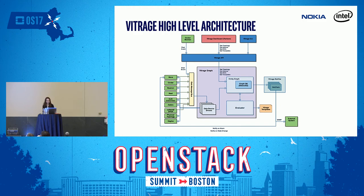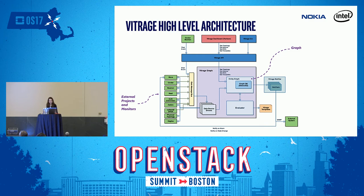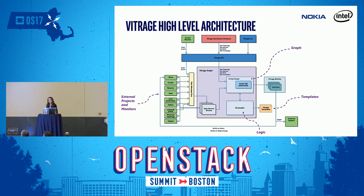Vitrage collects information from different data sources — some are OpenStack components like Nova, Cinder, Neutron, Heat, and also AODH, the Telemetry Alarming Service. Others are external monitors: Zabbix, Nagios, and CollectD. All this information is collected and inserted into a topology graph, the entity graph, where you can see all resources and alarms Vitrage collected and the relationships between them. When the graph is modified, the Vitrage evaluator checks if there are actions to be taken. An action could be to raise a new alarm, to mark a causal relationship between existing alarms, or to modify the state of an object. The logic and rules for when to execute these actions are defined in a template.